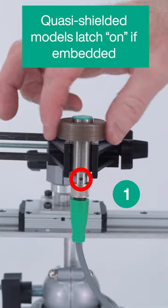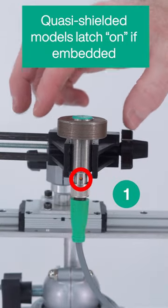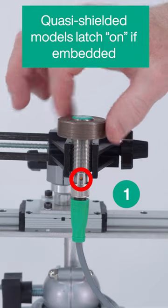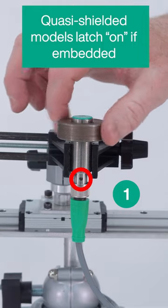Sensor 1 is a long-range, quasi-shielded model. Although the barrel is fully threaded, its sensing field extends a bit from the side and it latches on well before it could ever be embedded.